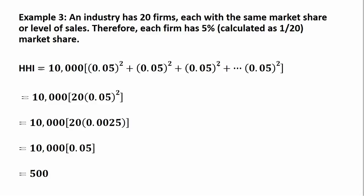Let's do another example, example three. We have an industry with 20 firms, each with the same market share or level of sales. Therefore, each firm will account for 5% of the total market share, calculated as 1 divided by the number of firms, which is 20. So setting up our Herfindahl-Hirschman Index is 10,000 times the market share of the first firm at 5%, the second firm at 5%, the third firm at 5%, all the way up to the 20th firm at 5%. Again, we're squaring all those market shares. This will just simplify to 20 times (0.05) squared.